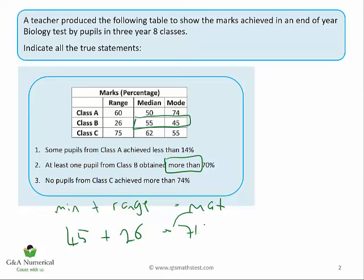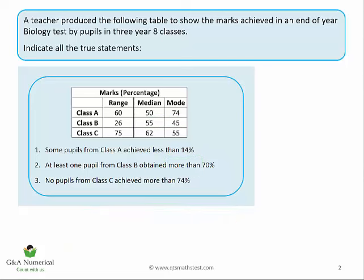That 71 is the highest value that someone could have got on the test from class B. Returning to the statement — at least one pupil from class B obtained more than 70% — we've got a 71, so that's a true statement. Moving on to statement three — hopefully you're believing all this so far — let's try the final statement.